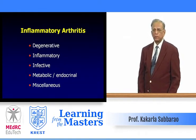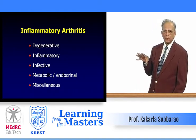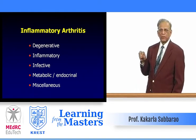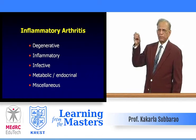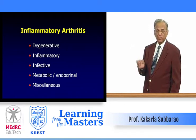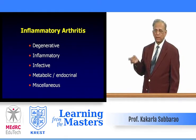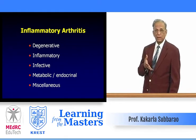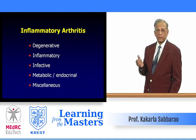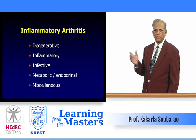Now we come to inflammatory conditions. An inflammatory condition of a joint is called arthritis. Several types exist: degenerative arthritis, inflammatory arthritis, infective arthritis — either viral, bacterial, fungal, or spirochetal — metabolic or endocrine causes producing secondary arthritis, and miscellaneous causes.